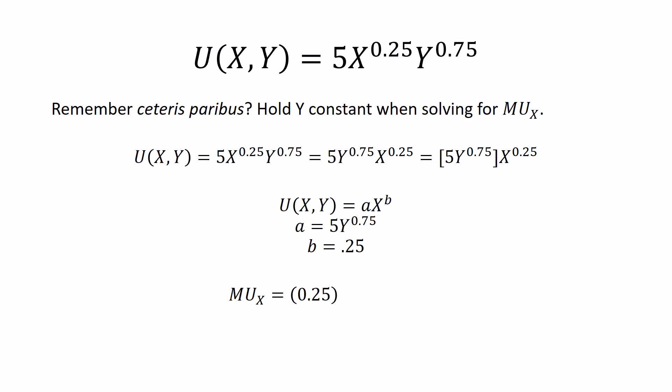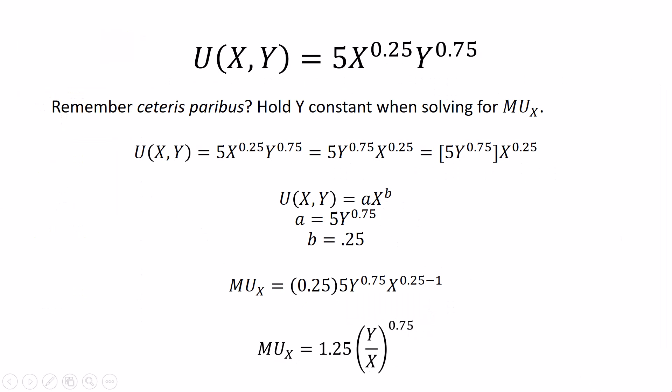So the marginal utility of good x is 0.25 times the 5. So we're multiplying our a and our b. Here's the rest of a, y to the 0.75. That's the a times b term that goes out in front, times x to the b minus 1, or 0.25 minus 1. Combine some like terms and you get this. If you're wondering why x is in the denominator, remember x to the 0.25 minus 1 is x to the negative 0.75. I don't like negatives, so I put them in the denominator so they can be positive. The marginal utility of good x with Cobb-Douglas utility and these parameter values is 1.25 times y to the 0.75 over x to the 0.75, which you could rewrite as being 1.25 times (y/x) to the 0.75.